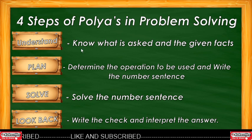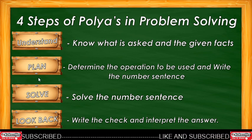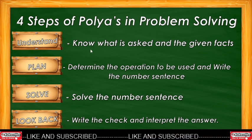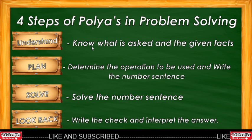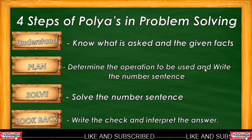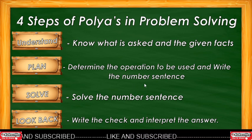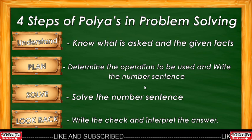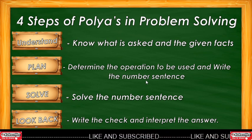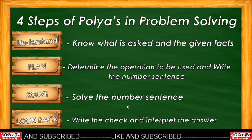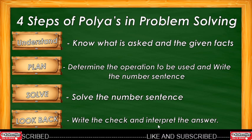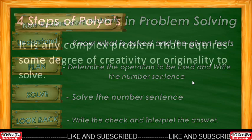Here are the four steps of problem solving: Understand, Plan, Solve, and Look Back. In Understanding, we identify what is asked and what the given facts are. In Planning, we determine the operation to be used and write the number sentence. In Solving, we solve the number sentence and write the complete solution. In Looking Back, we write the answer, check, and interpret the answer.